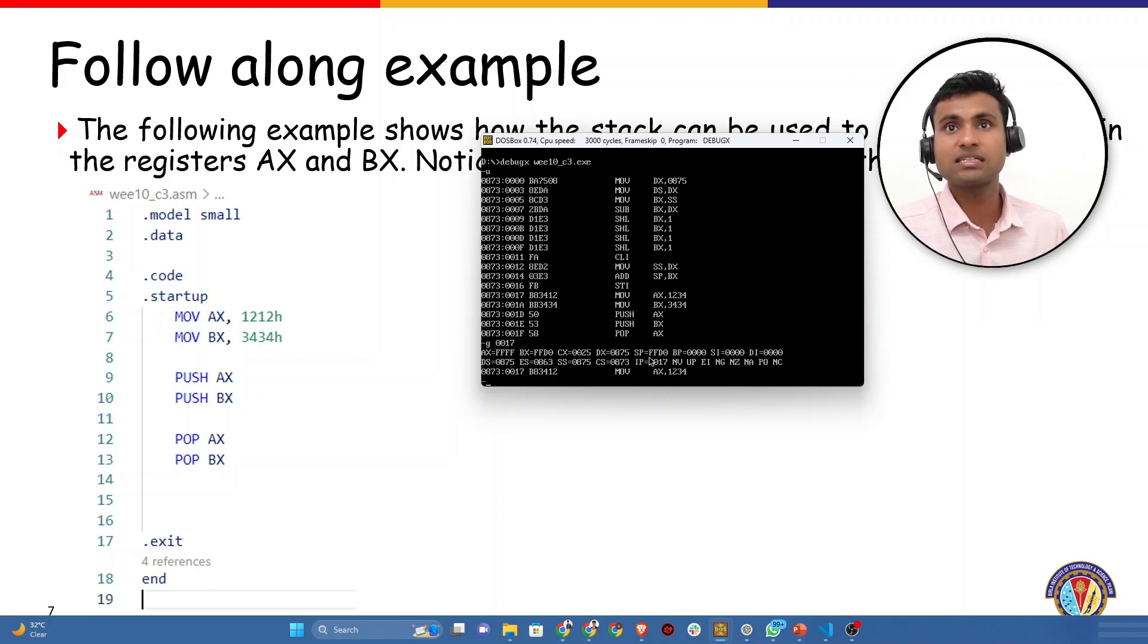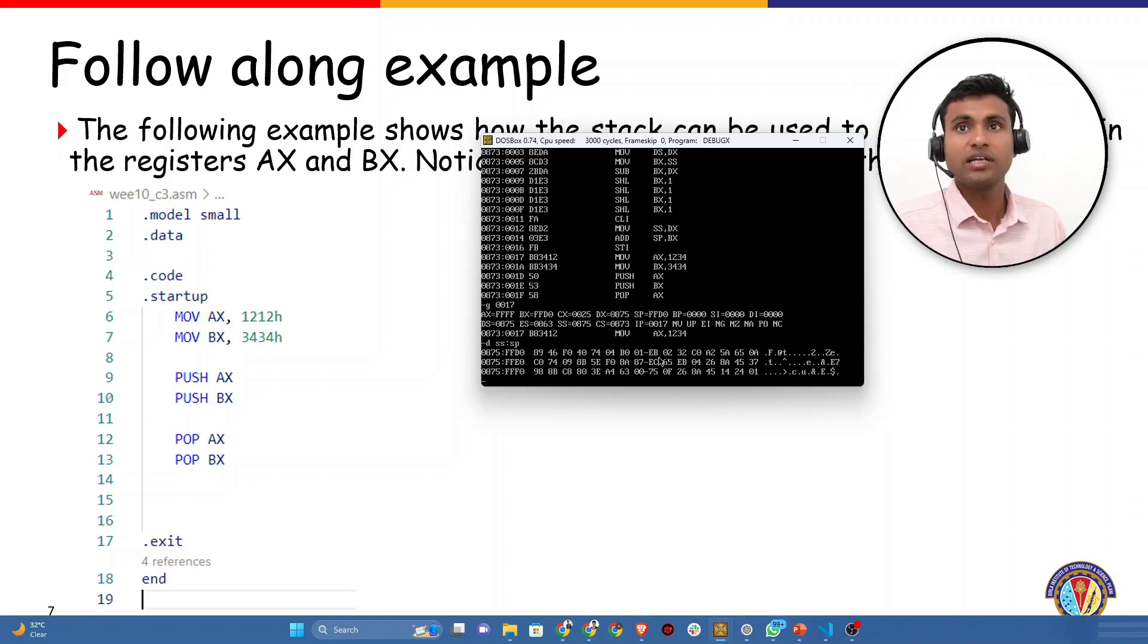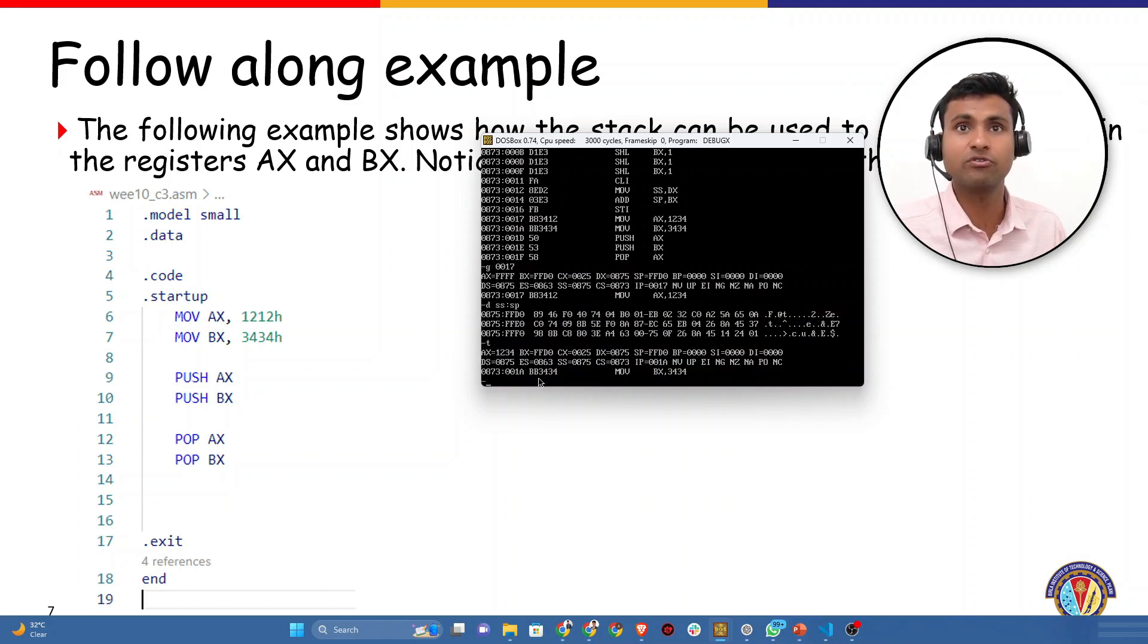Let's execute and reach the point where our code starts to execute, which is 0017. As of now, one thing which we can notice is the stack segment. If you want to access the stack right now, the stack segment colon the stack pointer. If I do D stack segment colon stack pointer, it would point me to the memory location where the stack is right now. I don't see anything. You know that stack grows upwards; the memory decreases as the stack grows.